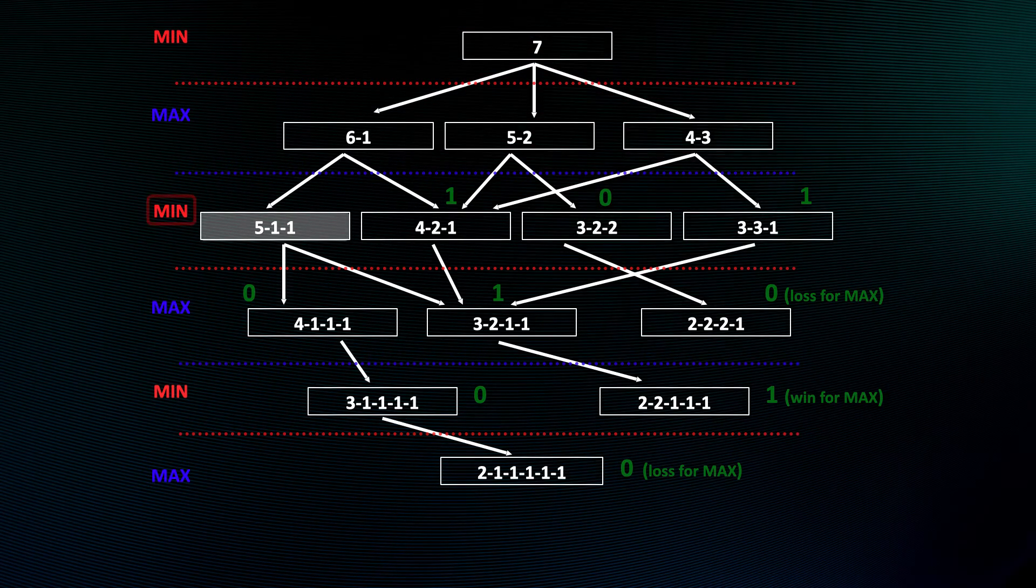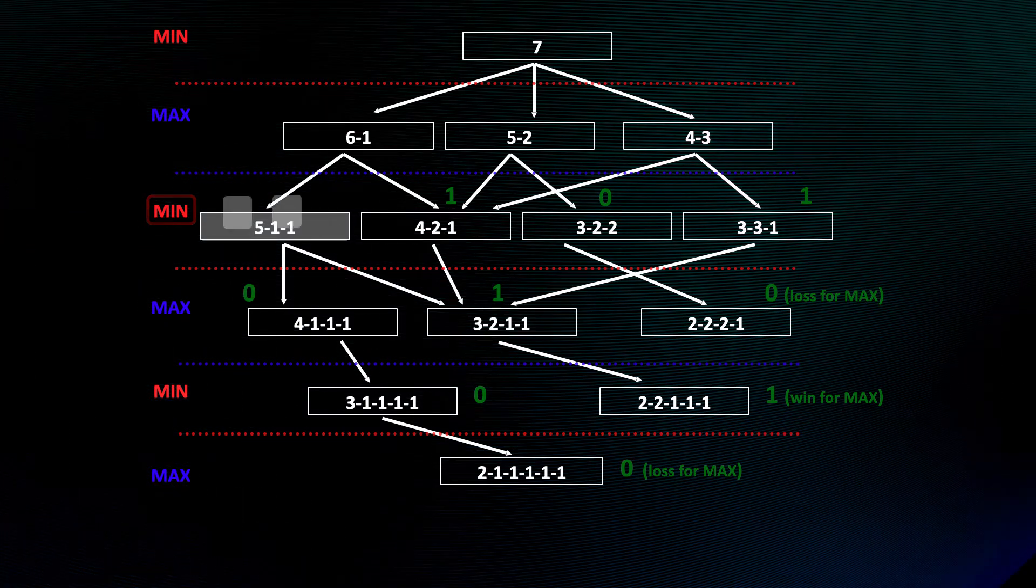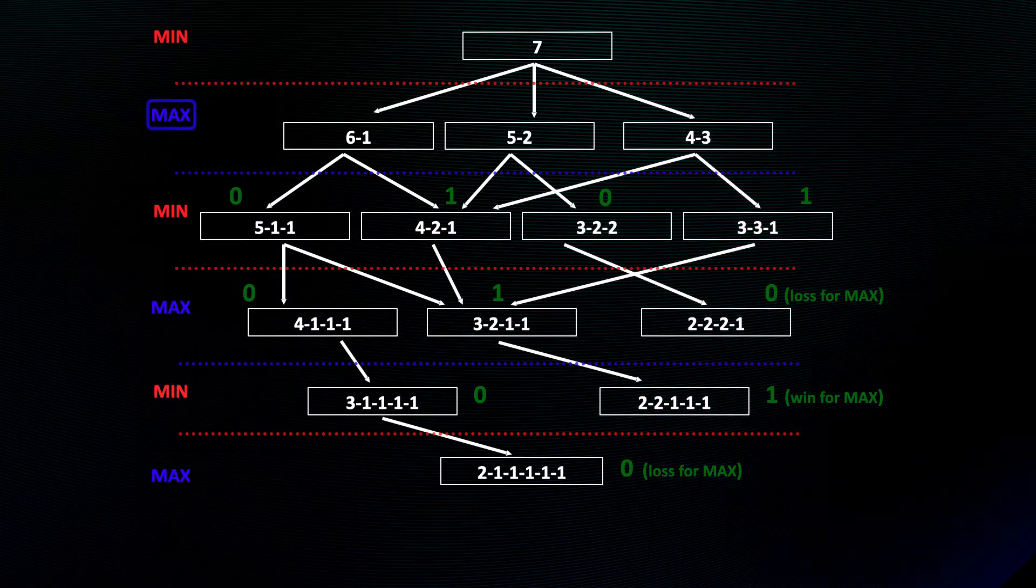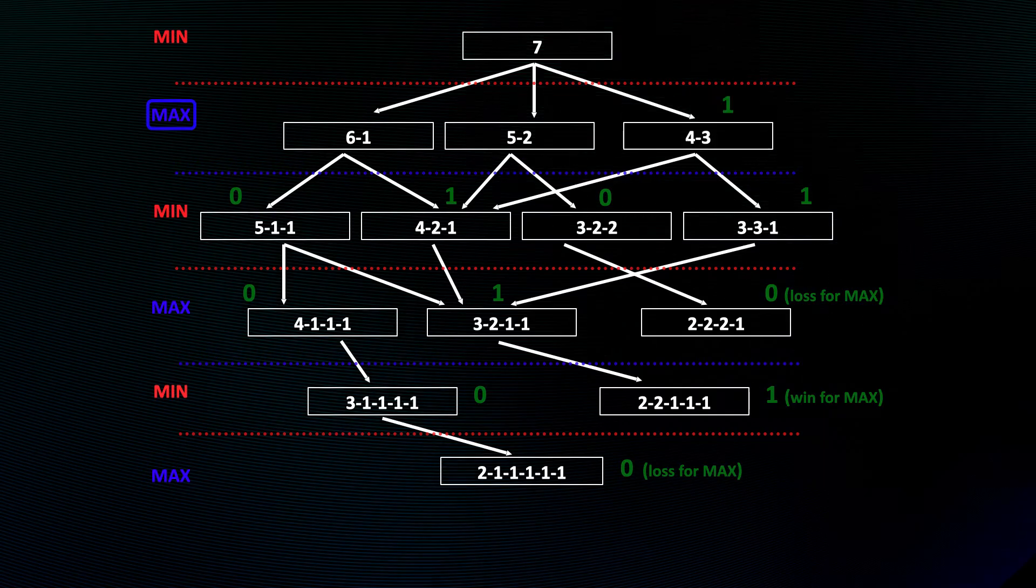With more than one move, Min will prefer the smallest of the options. But Max chooses the largest.